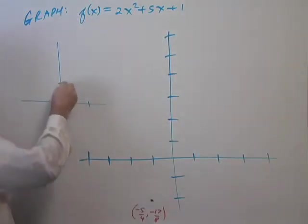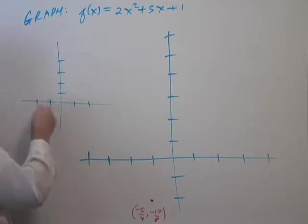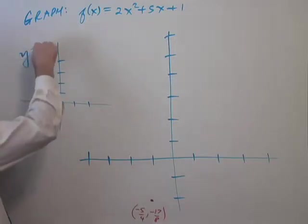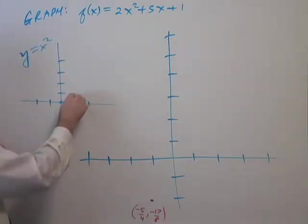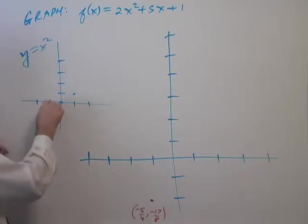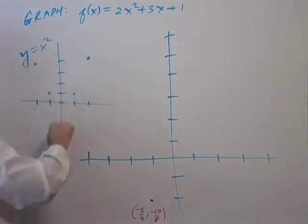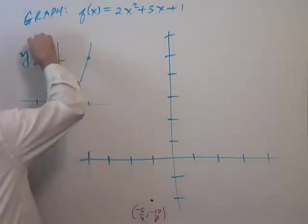So the basic y equals x squared parabola works like this. I have a vertex at the origin. This is y equals x squared. And when x equals 1, y equals 1. When x is negative 1, y is positive 1. When x equals 2, y equals 4, and likewise over here.